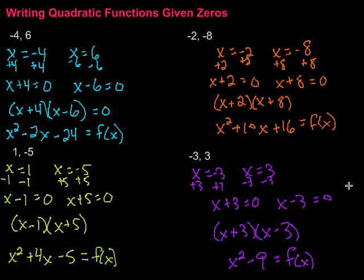In this video, we looked at writing quadratic functions given zeros. The steps are: set each zero equal to x, then get each equation equal to 0, then multiply those two factors together using FOIL to get the quadratic function. Note that this is just the simplest of an infinite number of quadratic functions with those zeros — multiplying through by another number gives a different function but the same zeros. Keep working hard on your math — you can do it!